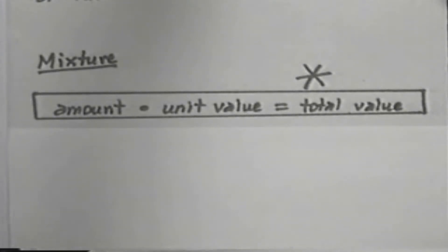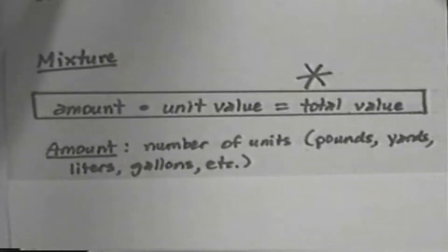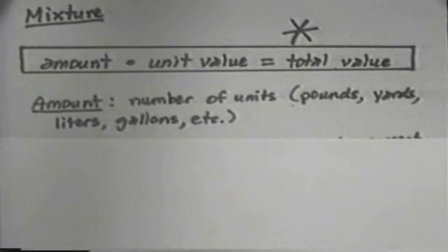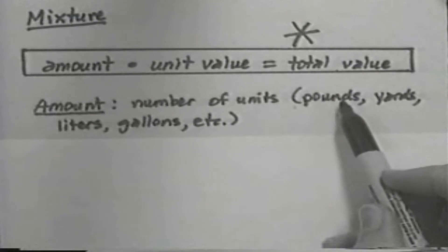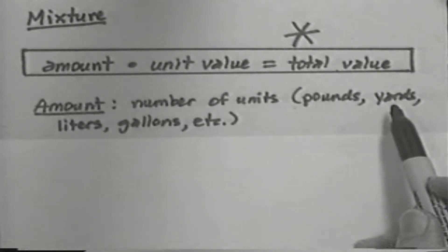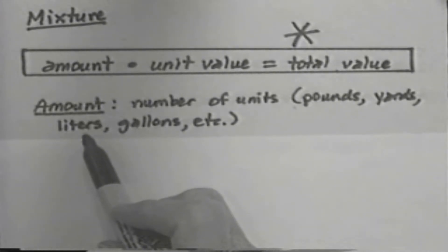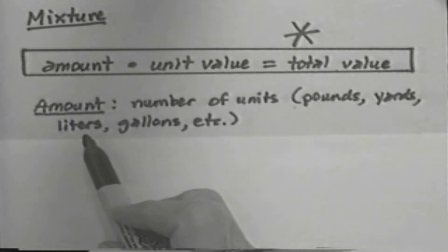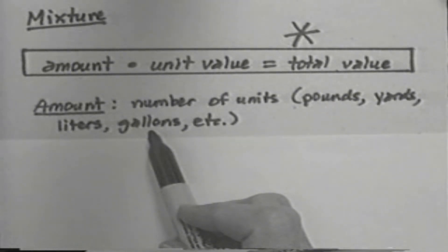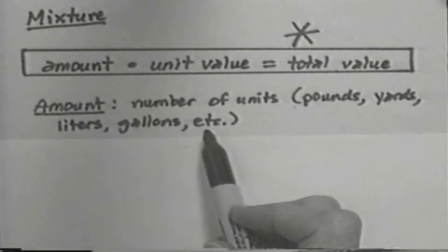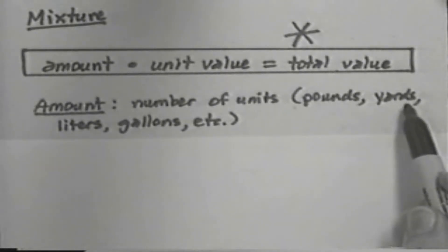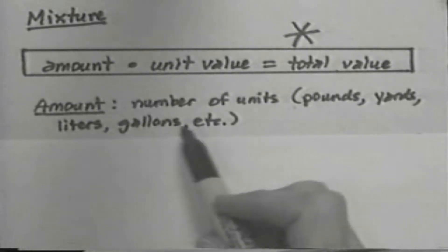Let's look at what is meant by each of these. The amount is the number of units of whatever the item is. That number of units may be measured in pounds, as in pounds of coffee; in yards, as in yards of cloth; in liters, as in liters of disinfectant; or in gallons, as in gallons of fruit juice — and so on for all other kinds of units. The amount is simply how many of them we have: how many pounds of nuts, how many yards of carpet, how many liters of acid, how many gallons of milk.